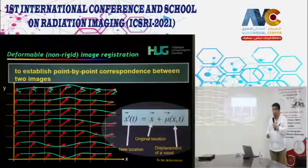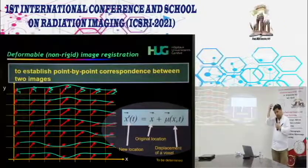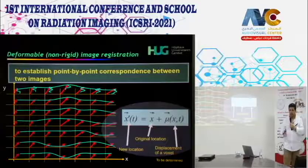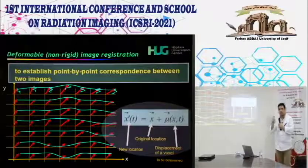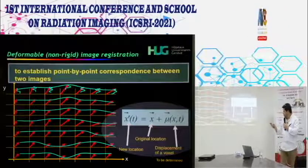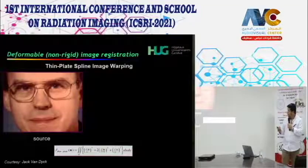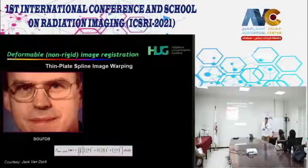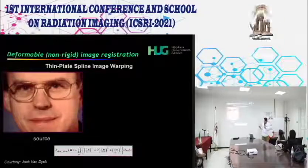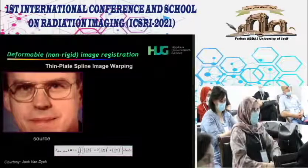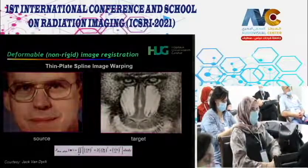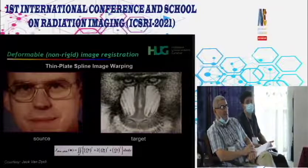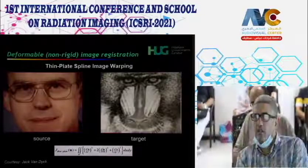Non-rigid (deformable) registration estimates pixel-by-pixel motion vectors to align the two images. A humorous illustration from a radiation therapy physics textbook shows thin-plate spline-based image warping applied to register a human face with a baboon—demonstrating the technique's ability to handle large deformations.